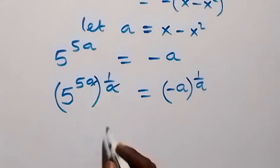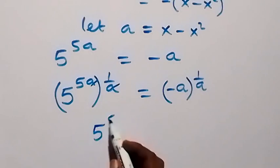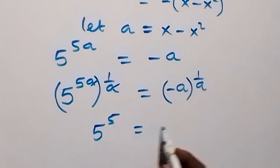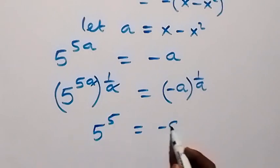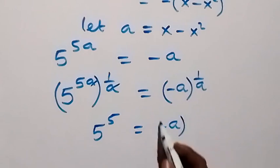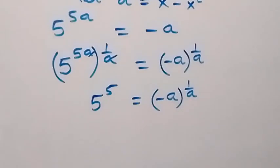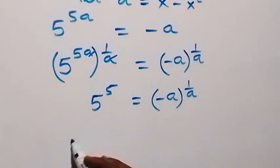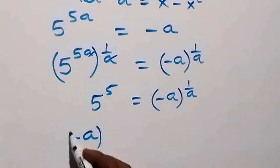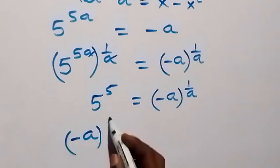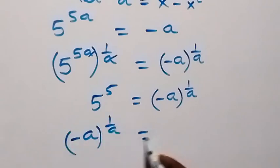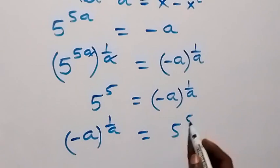Since we multiply, a will cancel a, and we are left with 5 raised to power 5, which now equals to minus a raised to power 1 over a. It's the same thing as writing minus a raised to power 1 over a equals to 5 raised to power 5.